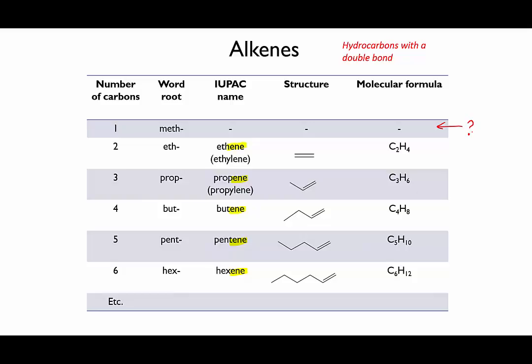Now have a look at the molecular formula for alkenes. As with alkanes, they follow a pattern — can you see it? What would be the formula for an alkene with N carbons? Well, this one's pretty easy. If there is one double bond in the molecule, two hydrogens must have been removed. So an alkene has two fewer hydrogens than an alkane, meaning that alkenes have the formula CnH2n.